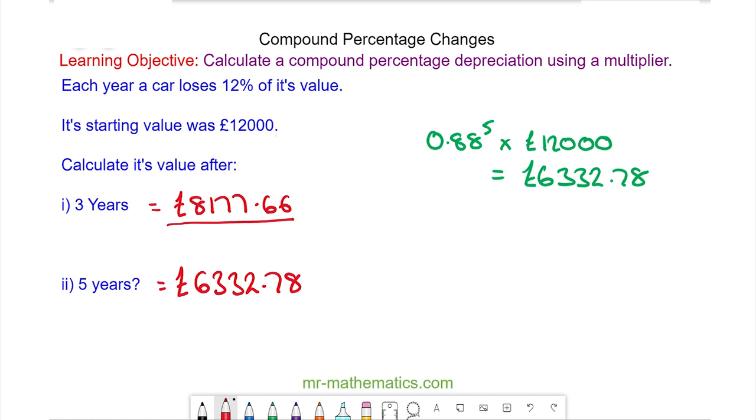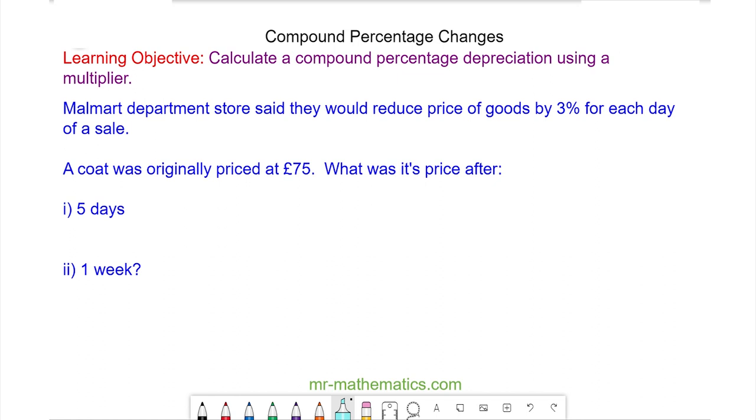Okay let's try some more questions. Walmart department store said they would reduce the price of goods by 3% for each day of a sale. A coat was originally priced at £75. What was its price after five days and one week? Do you want to try this question yourself by pausing the video.